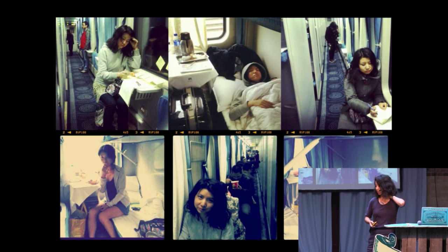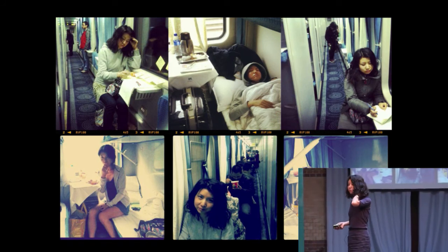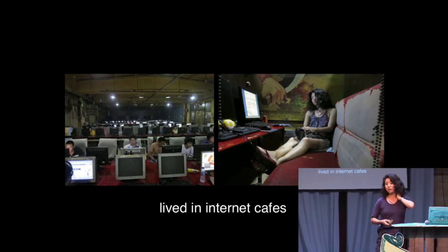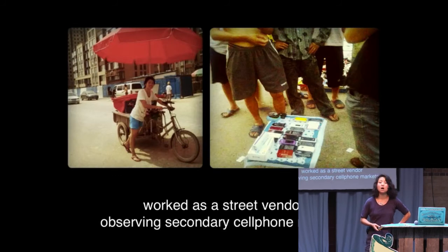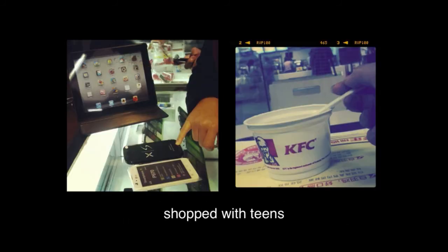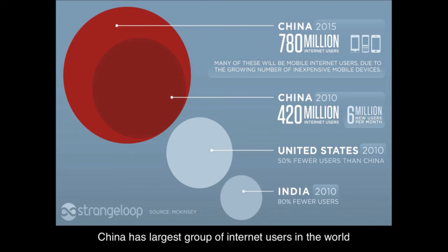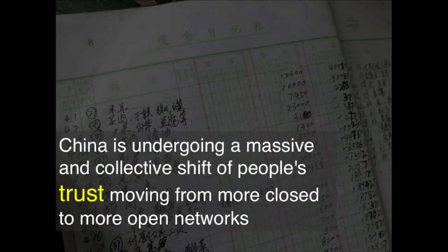I say all this having just returned from two years of fieldwork in China, where I traveled over 60,000 miles on trains, planes, boats, scooters, and donkeys — all to figure out how people use technology on the ground. I used immersive ethnographic methods like living with gamers inside internet cafes, working with migrants as a street vendor to observe how secondary cell phone markets pop up around construction sites, and shopping with teens to understand emerging consumer habits. In the last year we've seen eye-opening economic statistics about China — already the world's second largest economy, with the largest group of internet users and social media users. But what these statistics don't tell you is that millions of people in China are acquiring, forwarding, and sharing information with people they don't personally know, and some of this information is quite sensitive. It signals a massive collective shift of people's trust moving from closed to open networks — and this opening creates opportunities for programs like Free Lunch and many others to exist.